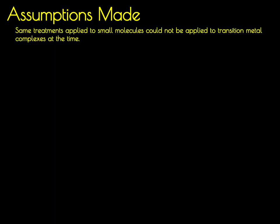At the time crystal field theory was developed, even the large approximations that were made to simplify the mathematics of quantum theory applied to molecules were computationally daunting when applied to transition metal complexes. Therefore, a number of approximations were made in the development of crystal field theory so that it could be used as a useful physical model. The biggest approximation involved the nature of the bonding between the metals and the ligands.